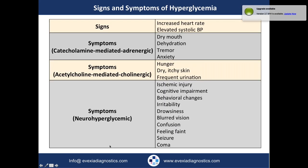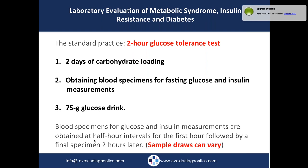Here's a list of signs and symptoms of hyperglycemia: increased heart rate, elevated systolic blood pressure, and catecholamine-mediated adrenergic symptoms such as dry mouth, dehydration, tremor, and anxiety. There are also acetylcholine-mediated cholinergic symptoms like hunger, itchy skin, and frequent urination, as well as neurohypoglycemic symptoms including blurred vision when things get really out of hand. Chris will get you a copy of the handouts with the full list.